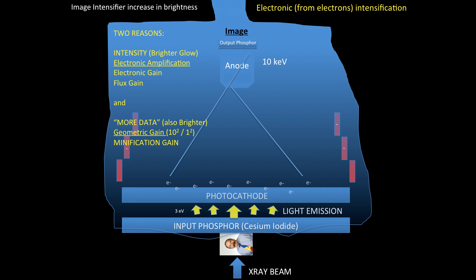So both geometric gain and minification gain are the same. They're just different names for the same process. I just gave you here a small example of the formula, so we have 10 squared, which represents my input phosphor, over 1 squared, which represents my output phosphor, and that gives you the measure or the calculation for the geometric gain that you generate as part of this process.